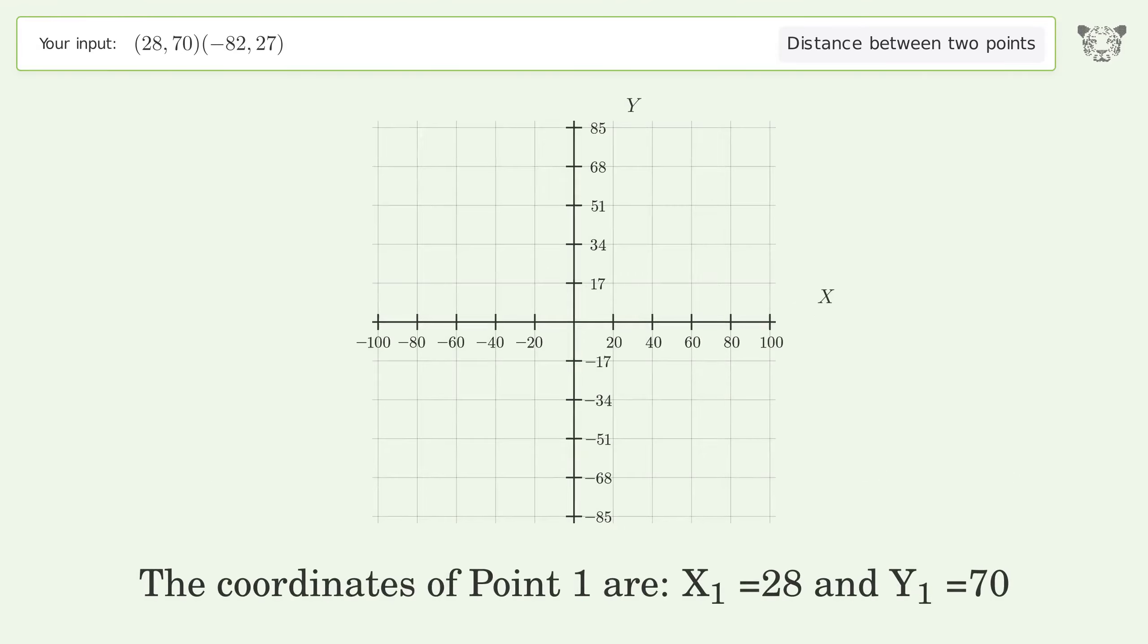The coordinates of point 1 are x1 equals 28 and y1 equals 70. The coordinates of point 2 are x2 equals negative 82 and y2 equals 27.